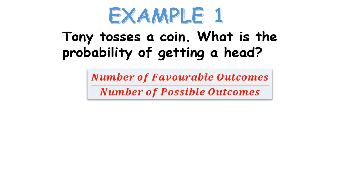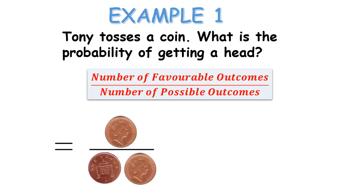The favourable outcome is the one you want. Tony tosses a coin - what's the probability of getting a head? The favourable outcome is 1 (one head on a coin), and there are 2 possible outcomes: heads or tails. So P(head) = 1/2.